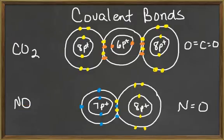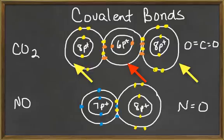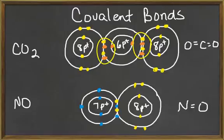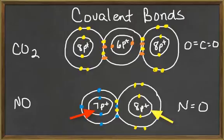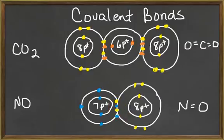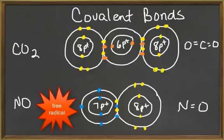Another two examples of double covalent bonds are carbon dioxide and nitric oxide. Carbon dioxide is produced as a waste product by our cells, and consists of one carbon atom and two oxygen atoms. Each carbon atom has six electrons, with four electrons occupying the outer shell. These two pairs of electrons are shared equally with two oxygen atoms, forming two double covalent bonds. Nitric oxide has one nitrogen atom and one oxygen atom. The nitrogen atom has seven electrons, with five electrons in its outermost shell. It will share one pair of these electrons with two electrons in the outermost shell of the oxygen atom. Even when nitrogen gains two more electrons by sharing with oxygen, it will still only have seven electrons in its outermost energy level. This leaves nitric oxide unstable, and we call it a free radical. It will react readily with other atoms or molecules in the body.